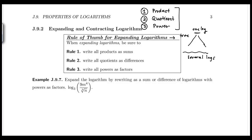Three rules of thumb. The first rule is to write all products as sums, write all quotients as differences, and all powers as factors. Rules one and two are best used together at the same time. Then at the end, look at powers on your values of logs and see if you can rewrite them as factors — so do rules one and two first, and the power rule second.